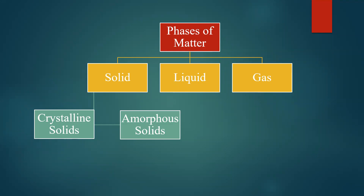The study of solid state physics includes crystalline solids. Crystallography is basically the study of the structure and properties of crystalline solids. It is sometimes also called X-ray crystallography because X-rays are used to determine the structure of crystals. The classification of liquids and gases will not be considered here.